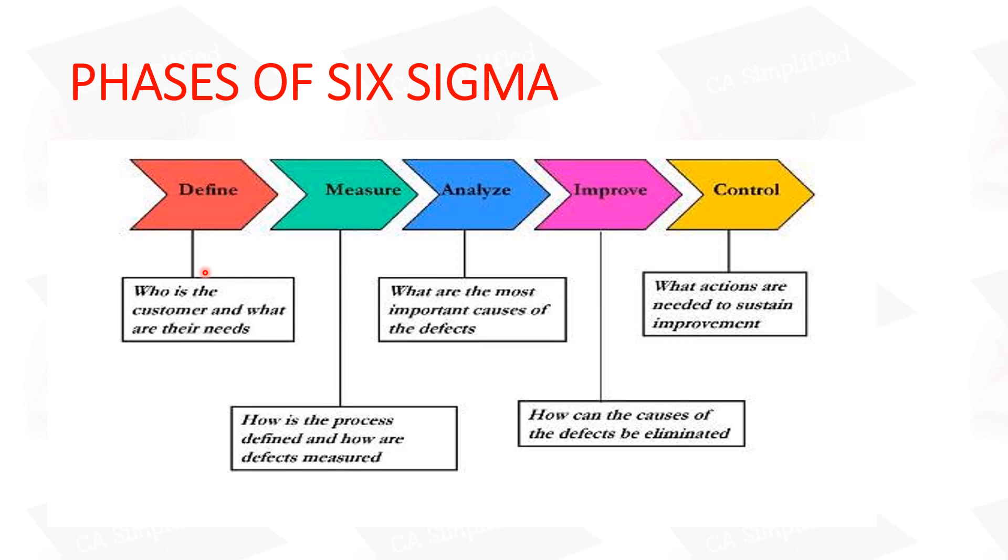What do you need to do? You need to define the customer's requirements, then measure the defects, then analyze the defects for the main cause and reason, then eliminate the root cause, which means you need to improve and remove the defects, and then control the process.